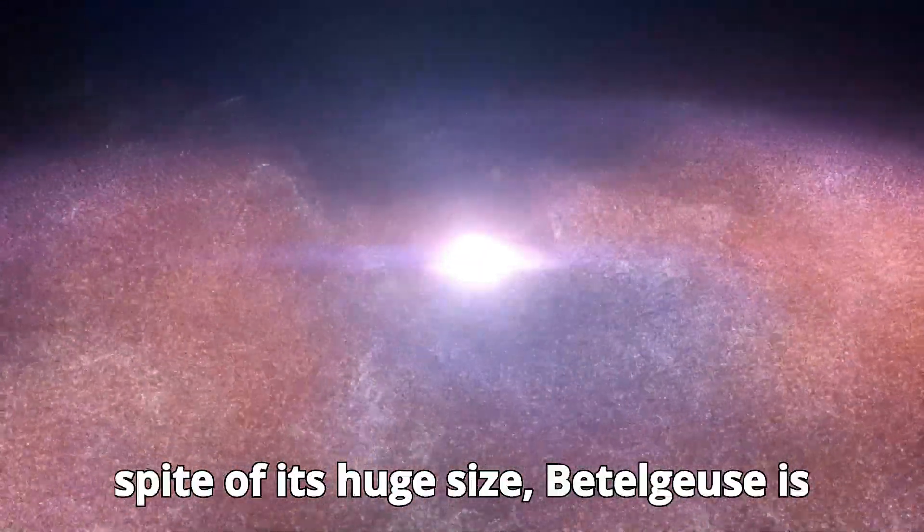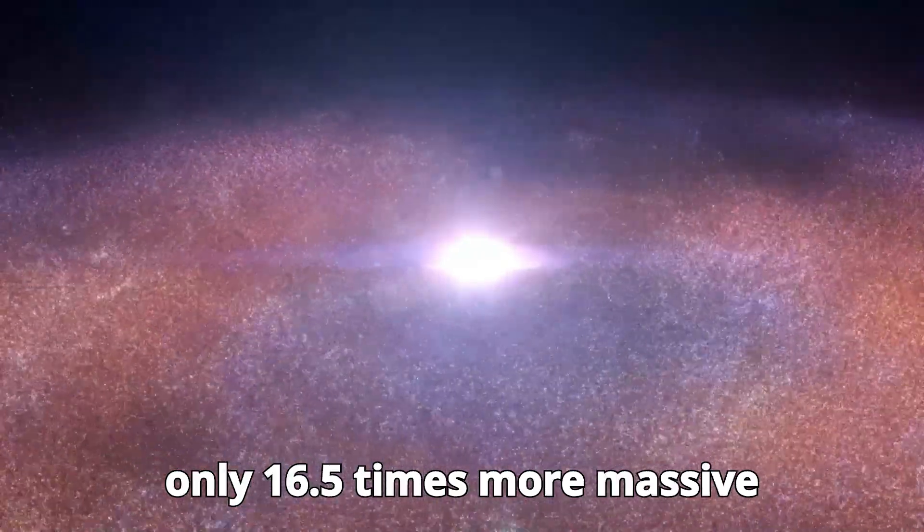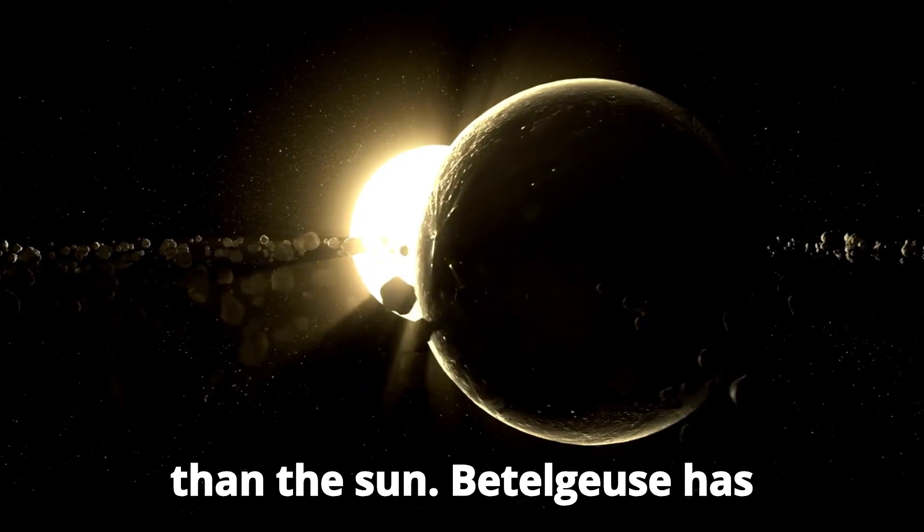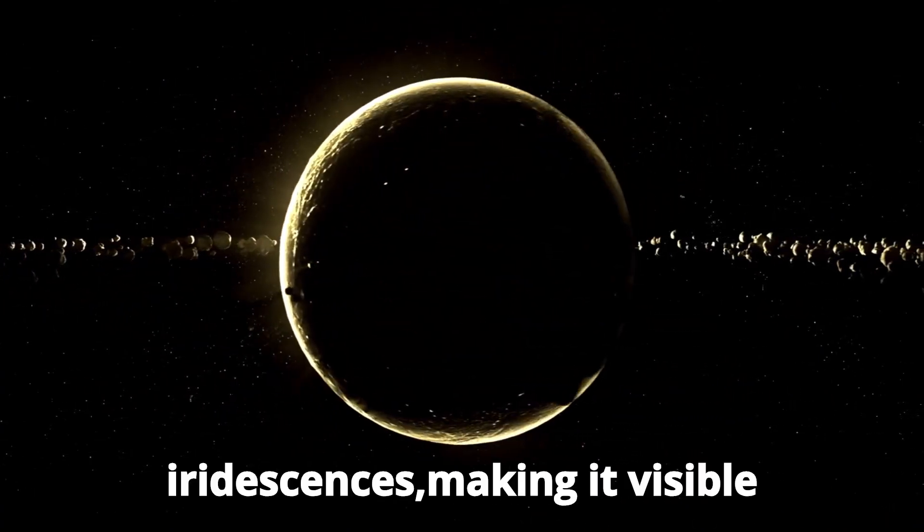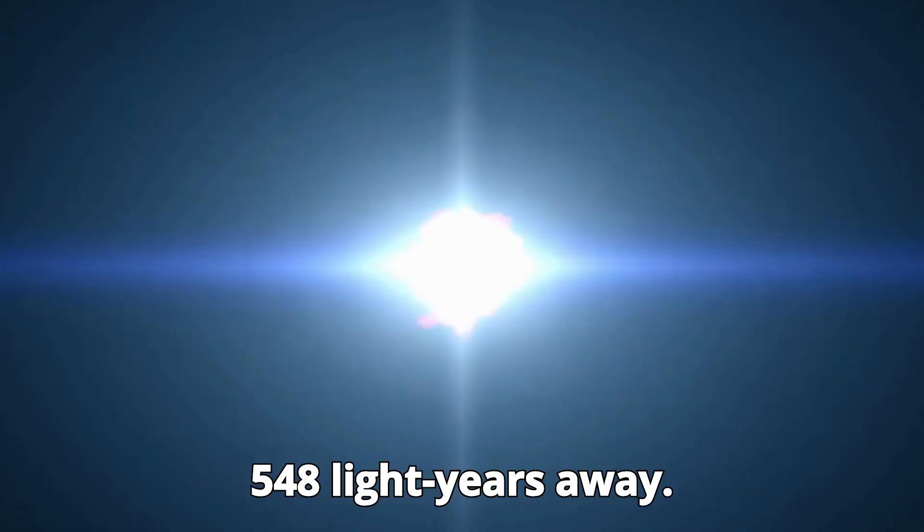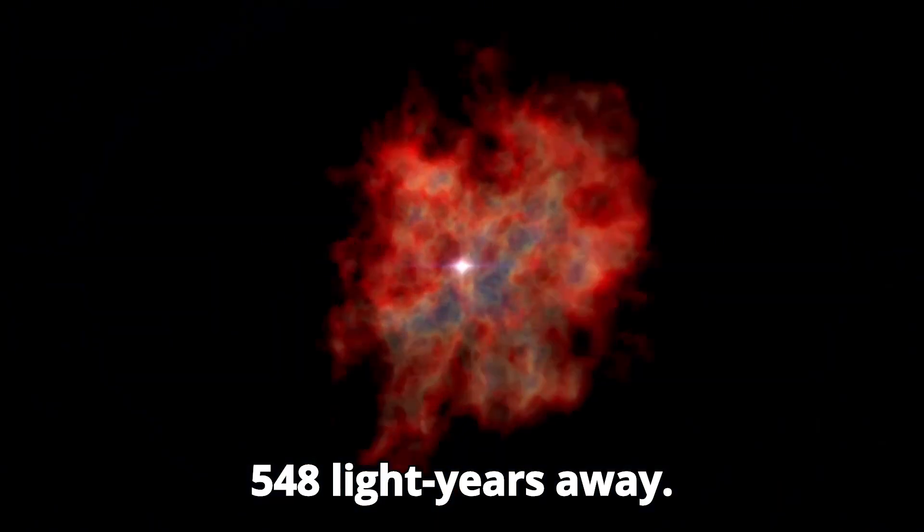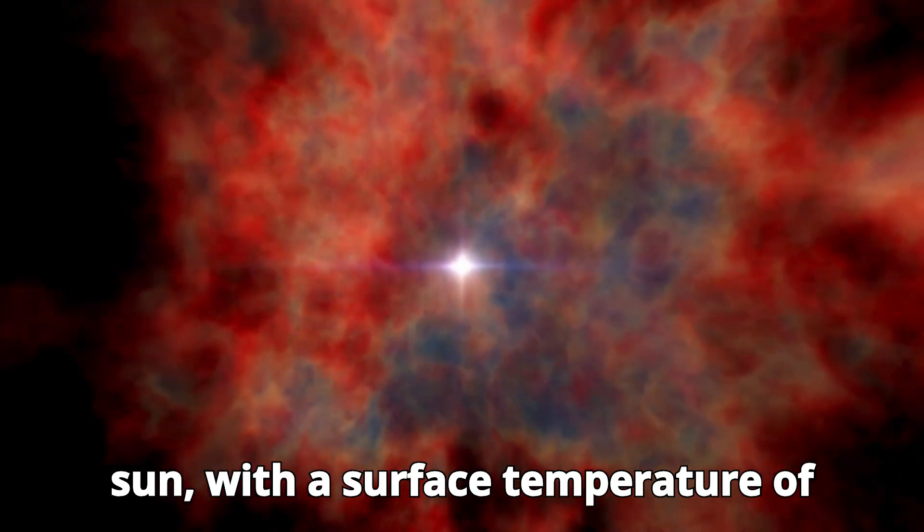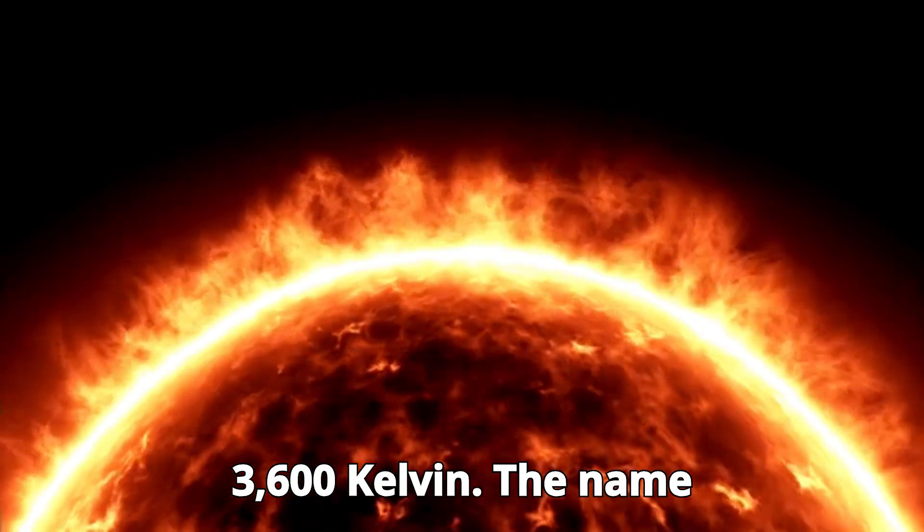In spite of its huge size, Betelgeuse is only 16.5 times more massive than the Sun. Betelgeuse has 126,000 solar iridescences, making it visible 548 light-years away. Strangely, Betelgeuse is cooler than the Sun, with a surface temperature of 3,600 Kelvin.